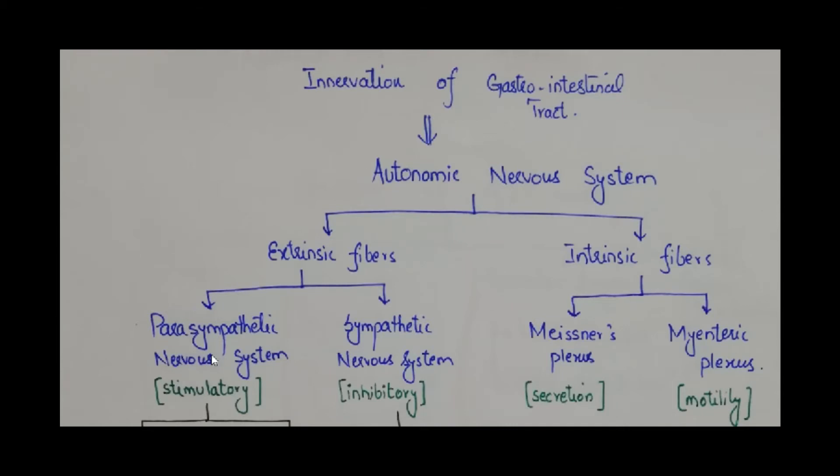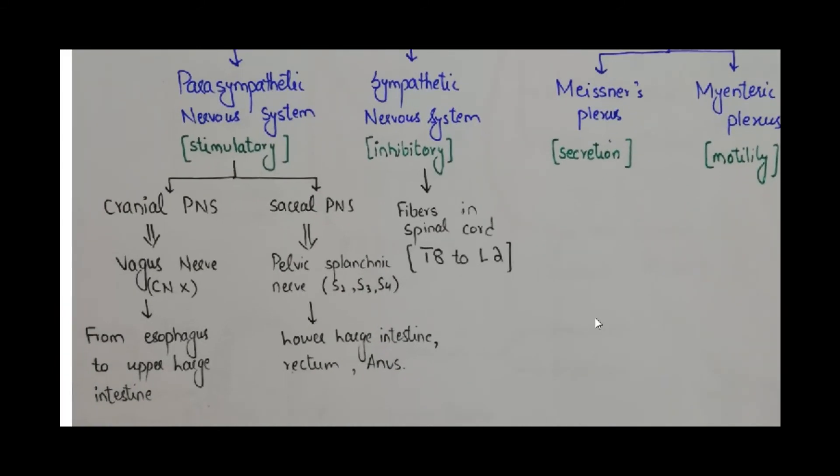Parasympathetic nervous system's primary role on GIT is stimulatory, whereas sympathetic nervous system's primary role on GIT is inhibitory. The Meissner's plexus which is present in the submucosa is primarily concerned with the secretion of different GIT hormones, whereas myenteric plexus which is present in the muscular layer is concerned with the motility of the GI tract.